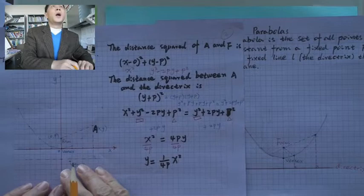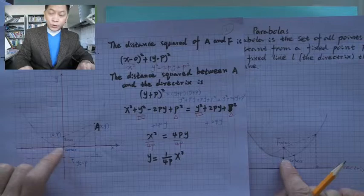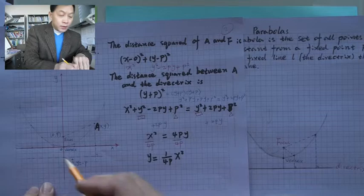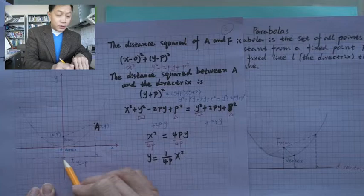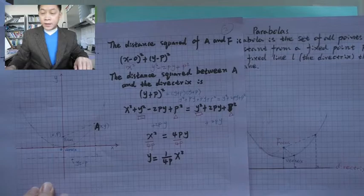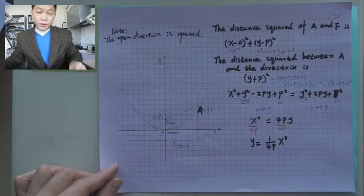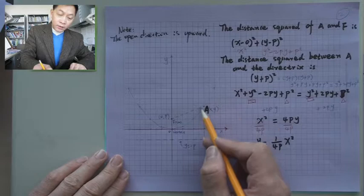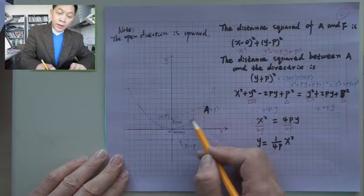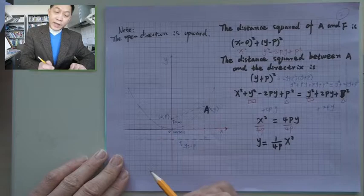We move the x-y coordinate plane so the vertex is at the origin. From the vertex to the focus, the distance equals the distance from the vertex to the directrix. The equation — how does it look? The set of all the points, if you collect them, will form the parabola.